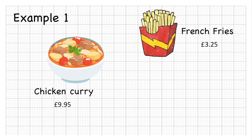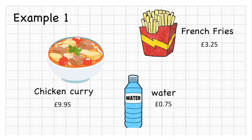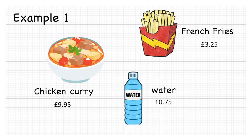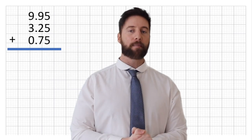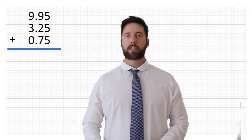For example, I could afford to buy a chicken curry at £9.95, some french fries at £3.25 and water at 75p. When I add those all together, so let's add them up.